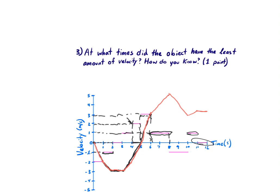Looking at this graph for question three: at what times did the object have the least amount of velocity? The answer is the times when velocity equaled zero — between two and three seconds, and between eleven and twelve seconds.